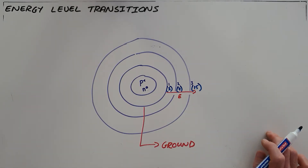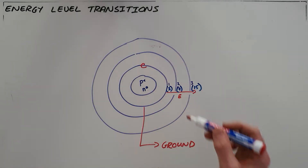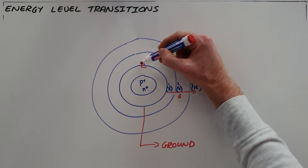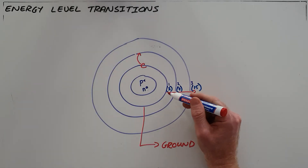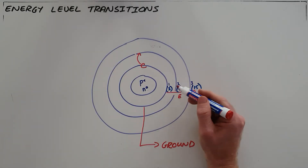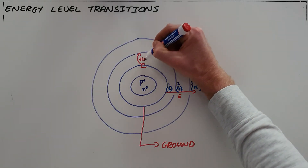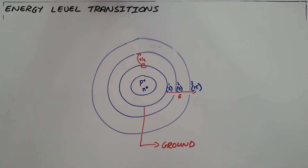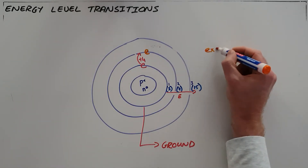Transitions between these energy levels are possible. The most common transition is an electron in the first energy level moving up into the second energy level. An electron in the first energy level has three joules of energy, so in order to move into the second energy level it would have to gain four joules of energy. Once it has moved into a higher energy level, we say that it is now in an excited state.